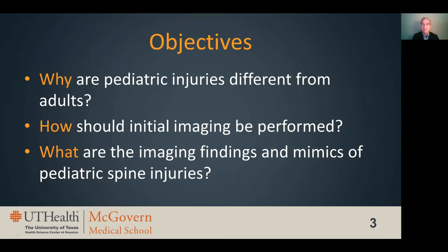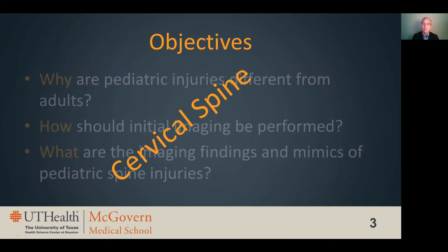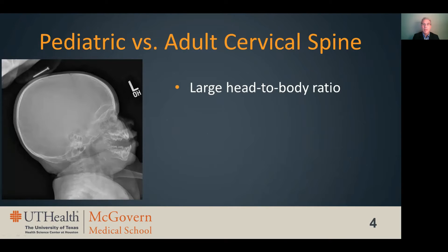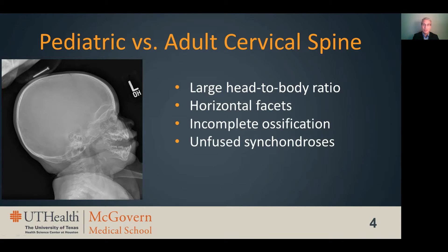Because we only have 15 minutes, I will focus on cervical spine injuries, which are where most injuries are encountered and where the greatest variation between child and adult injuries occurs. There are several ways in which a neonate's head and neck are very different from an adult. Babies have very large heads relative to their spine, very horizontal facets, incomplete ossification and fusion of the spine, and relatively lax ligaments. All of these factors lead to a very different set of injuries in kids compared to adults.